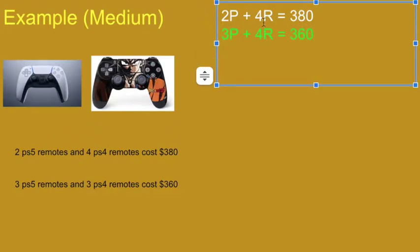And switch this color. 3P plus 3R equals 360. So I'm not going to refer to these as remotes, because PS4 versus PS5 remotes is going to confuse me. P and R will be easier. It's one of the reasons we use variables sometimes.